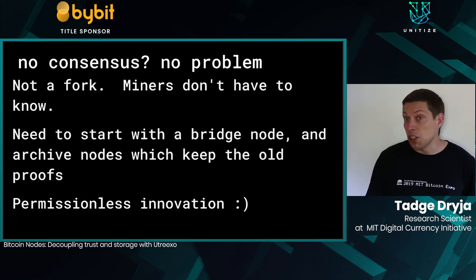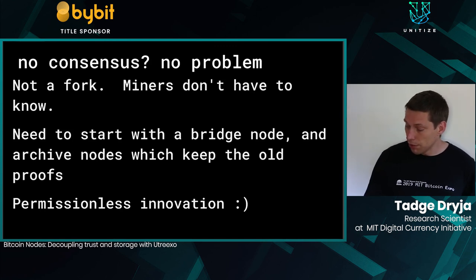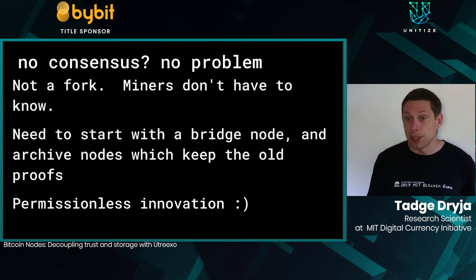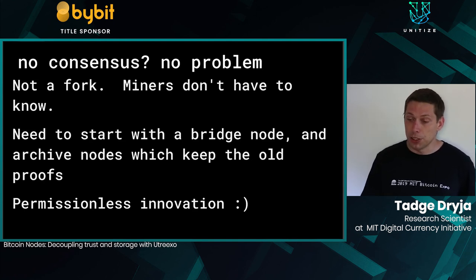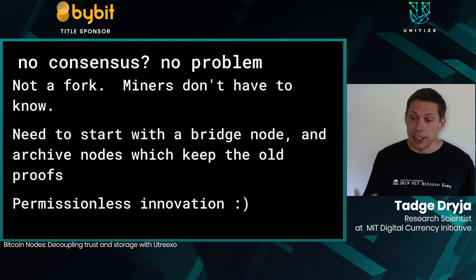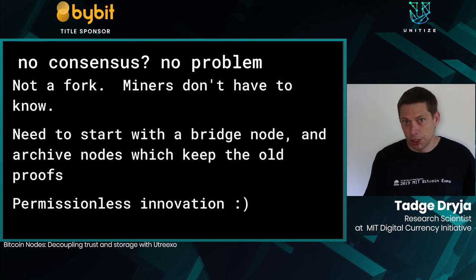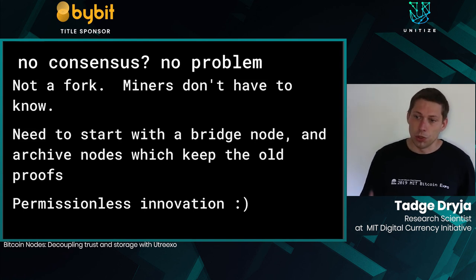This is not a soft fork or hard fork — there's no consensus required. Miners don't need to know about it. You can use it on testnet right now. You need bridge nodes and archive nodes to keep proofs, but it's permissionless innovation — no arguments needed. People can use the new software requiring proofs, bridge nodes provide them, and old software simply strips the proof from new transactions.